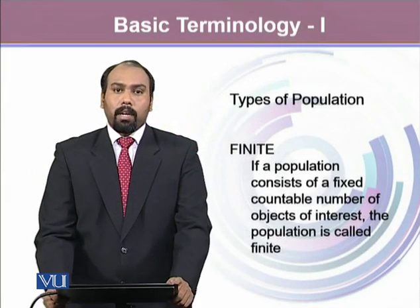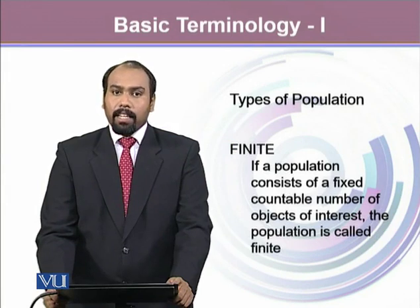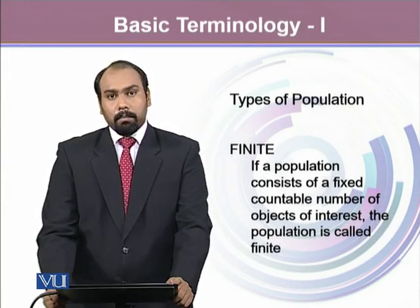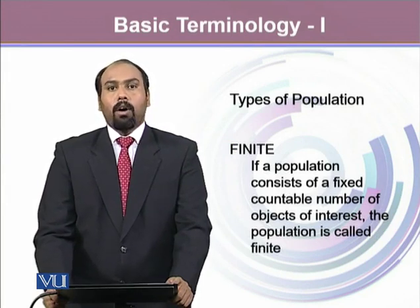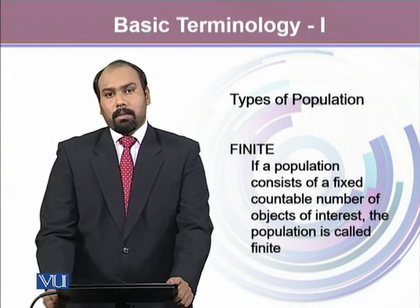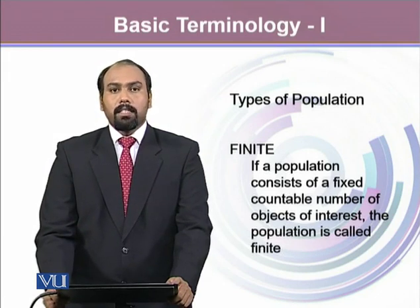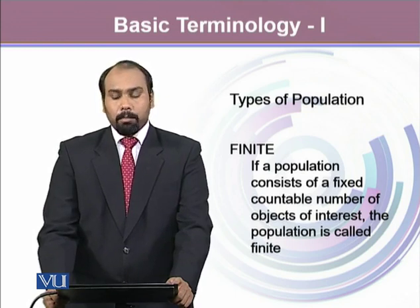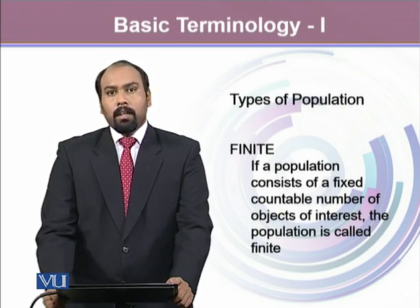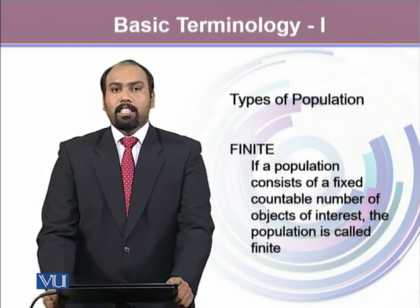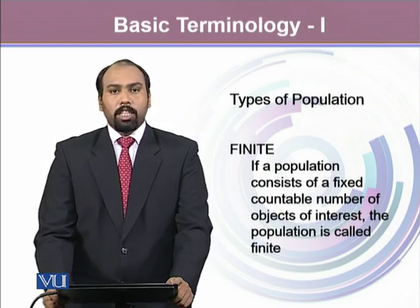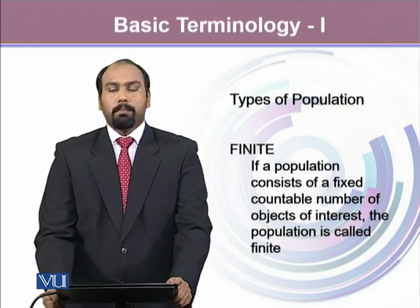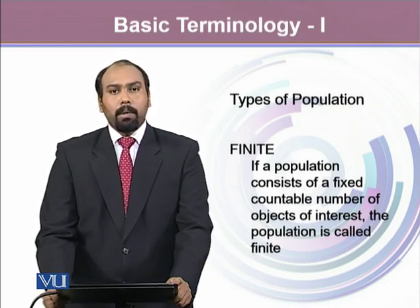There are different types of population. Finite population is one of them. When all the population units are countable, we call such populations a finite population. For example, the number of cancer patients in the city of Lahore — we can count them, we can identify them, so it will be called a finite population.